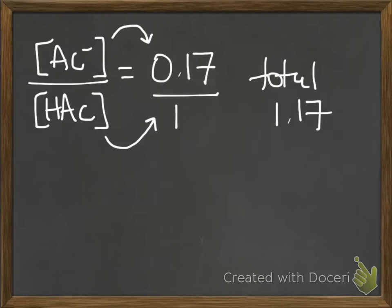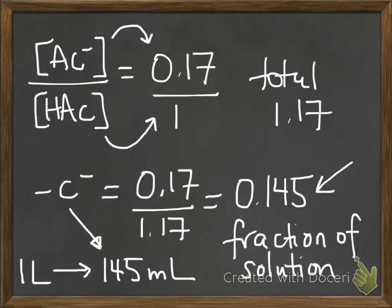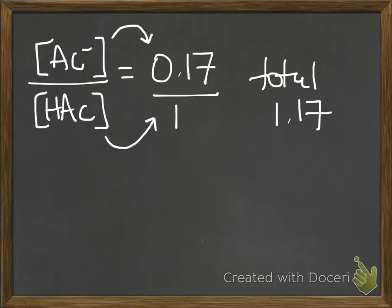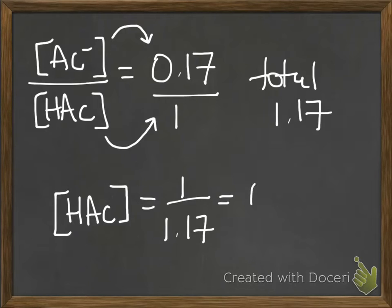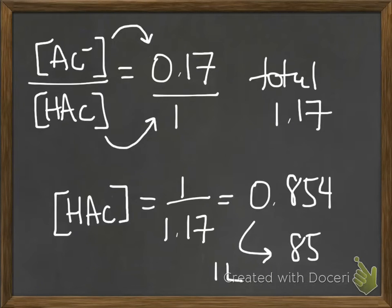So then you do the same thing for acetic acid. And you get 0.854 as the fraction of the total amount in the solution. And since your solution is 1 liter, this would be 854 mils.